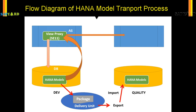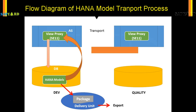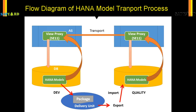Again, from the application layer, when we create the view proxy a transport gets generated. You can move the transport from your development to the quality system as you normally do with all the above objects. Once the HANA model is in the quality system and your view proxy is there in the application server of the quality system, your HANA model is complete.